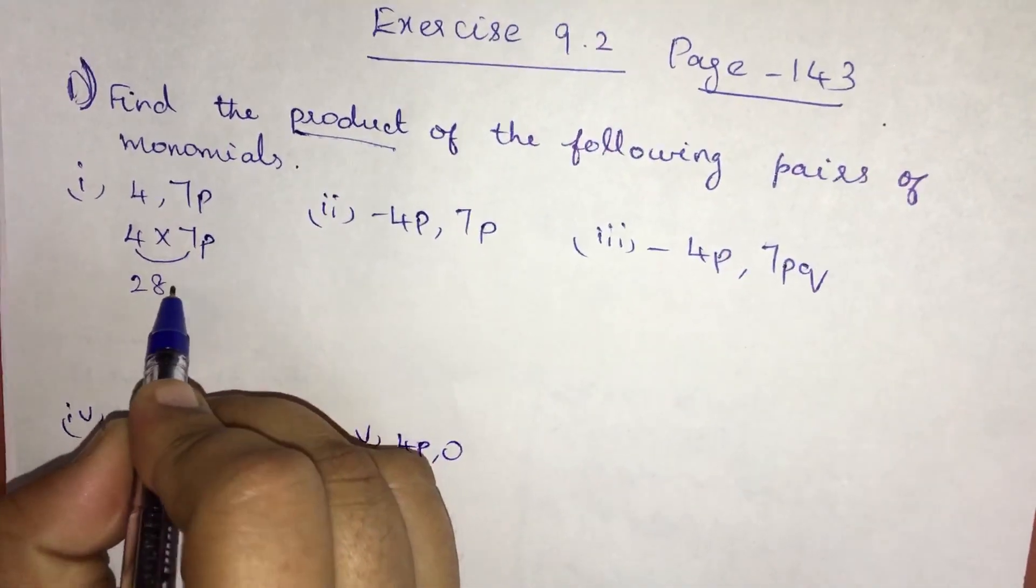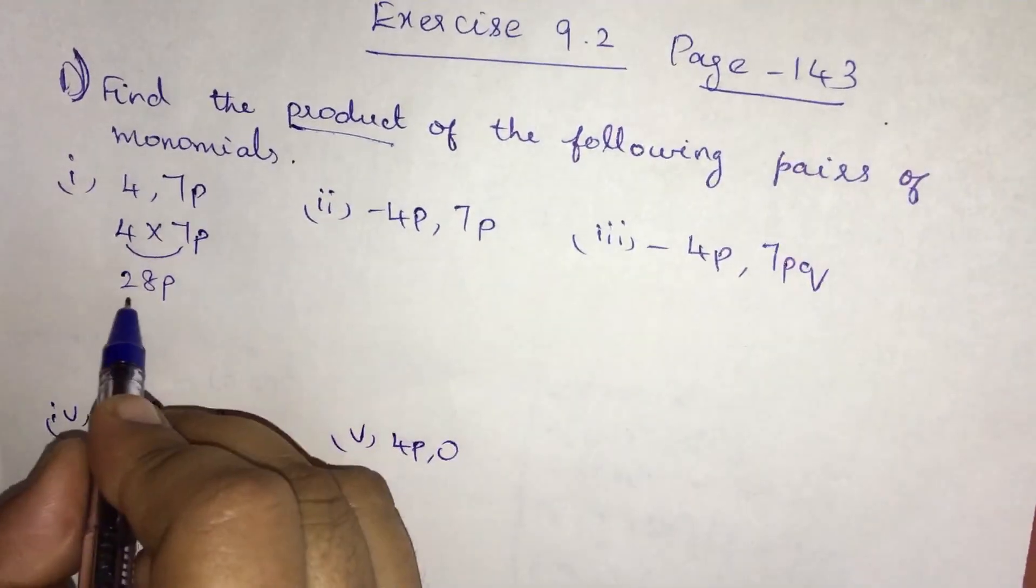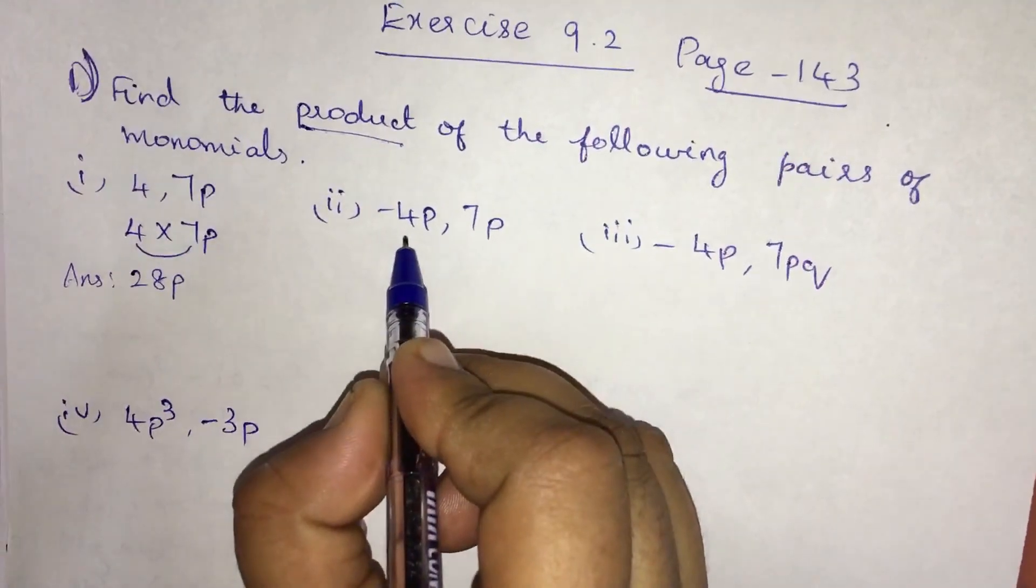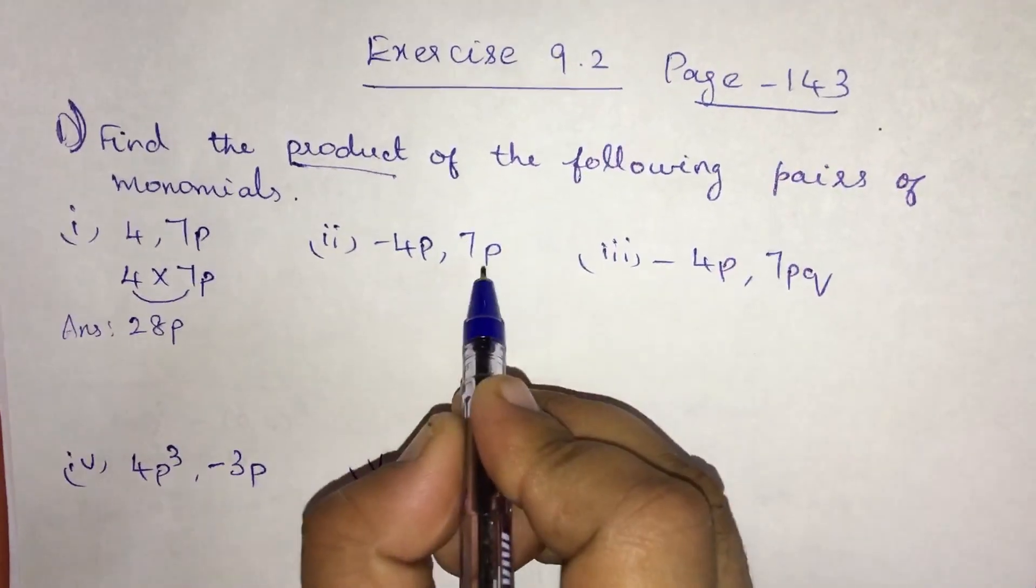Here is only one variable, so this p. The answer is 28p. Next sum: minus 4p comma 7p.